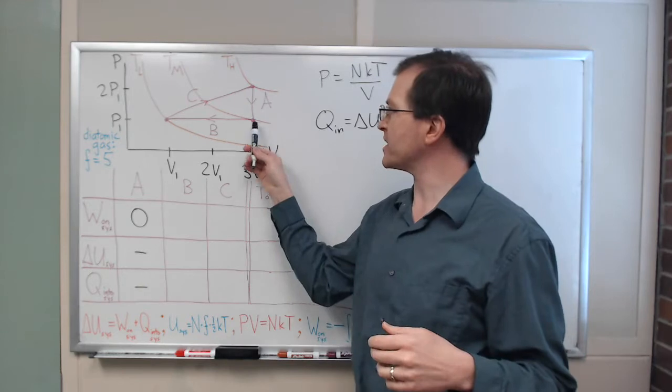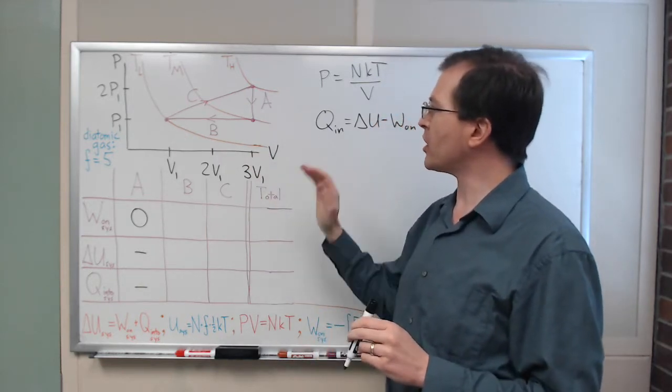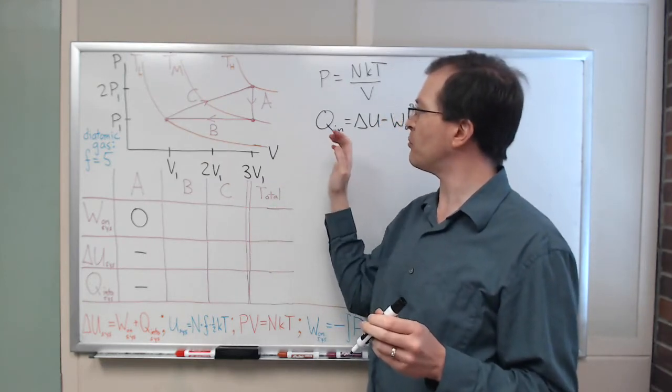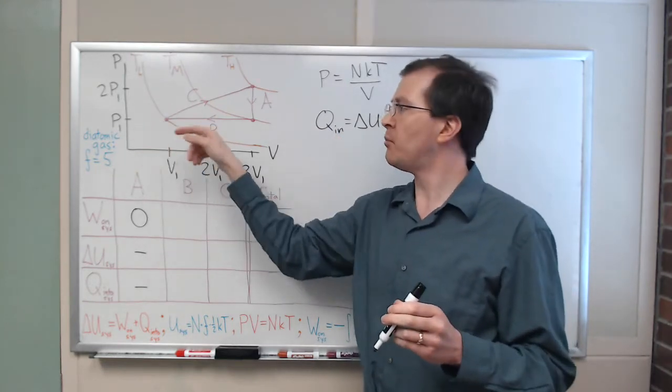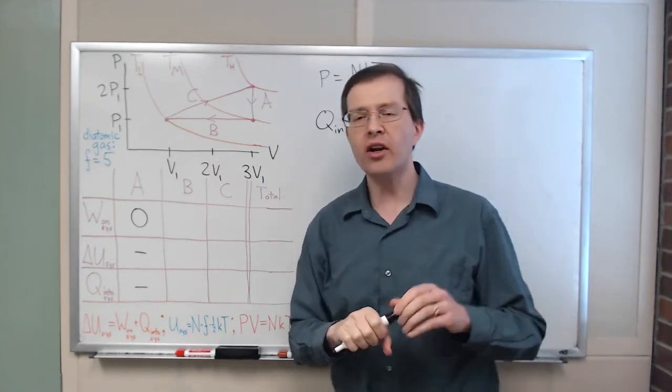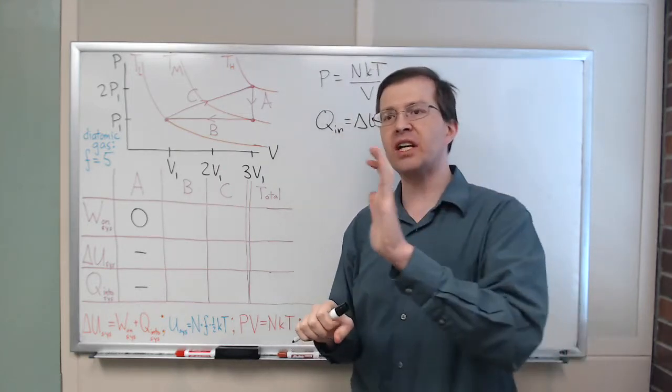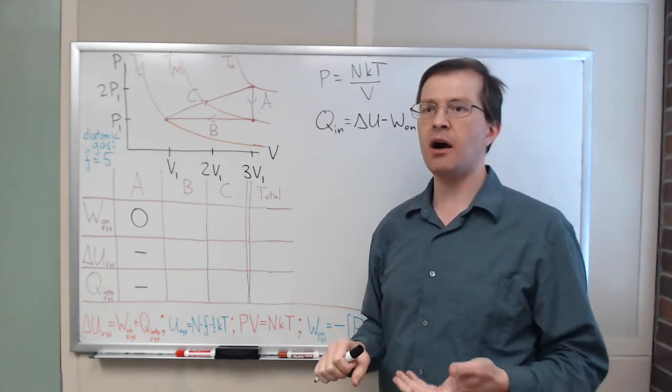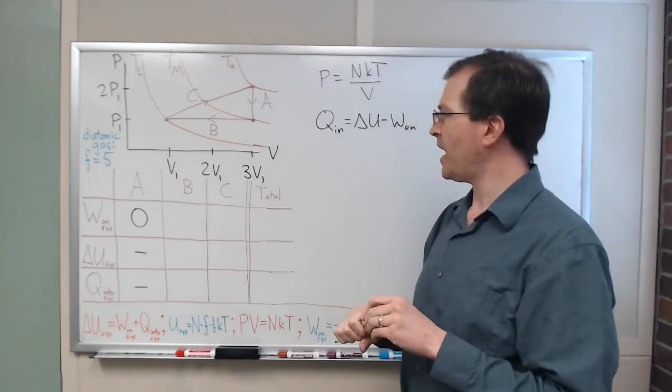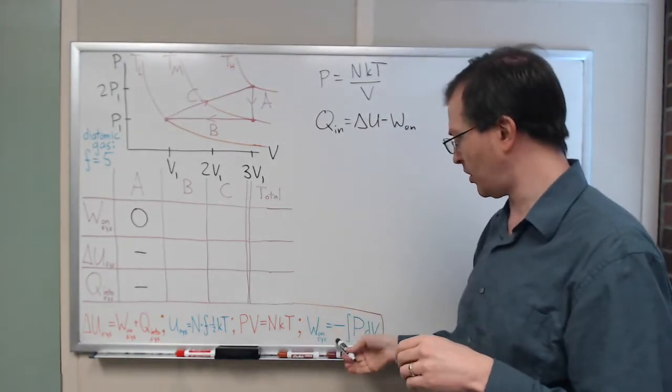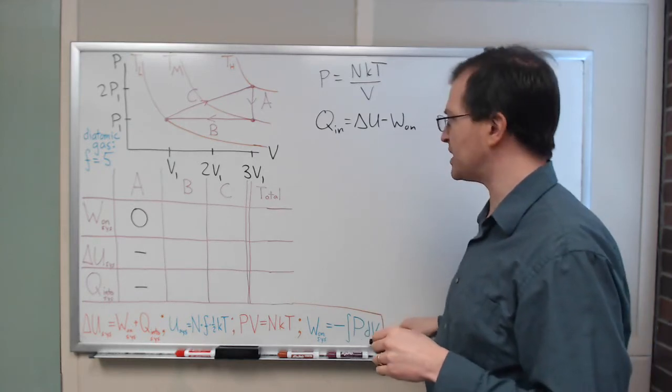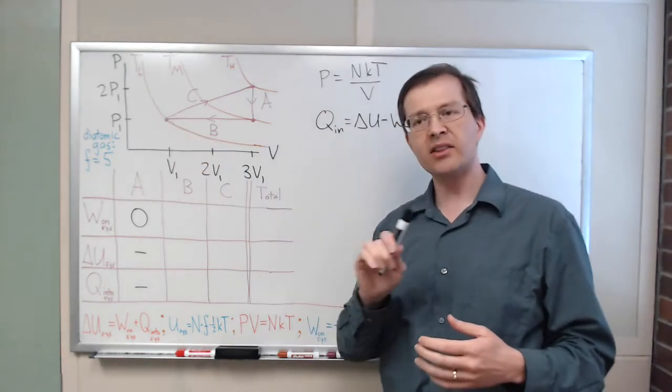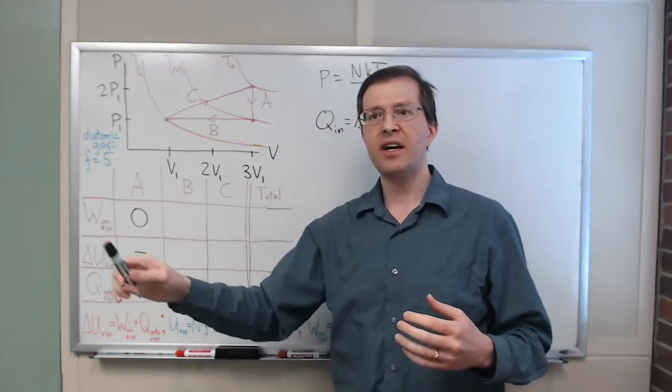All right, next step, process B. This is a process where we are compressing the gas to smaller volumes, but at constant pressure. So, if we are compressing the gas, that means we're pushing it inward. Intuitively, I expect the work on the system to be a positive number if I am compressing the gas. And sure enough, looking at this integral, the integral of PdV is the area under the curve. And the issue is we're going leftward here. And an integral to the left ends up being negative.